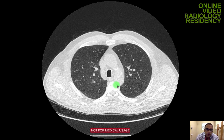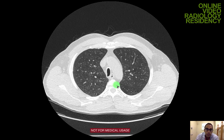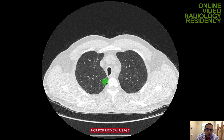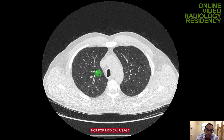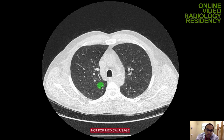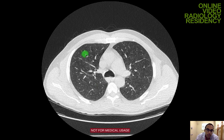Starting with the lung parenchyma — I'm on thin sections, lung windows of the axial imaging set. Confirming normal anatomy: it should be an air-filled structure, dark on CT, with branching structures within which are the vessels — pulmonary arteries and pulmonary veins — tapering nicely out to the periphery.